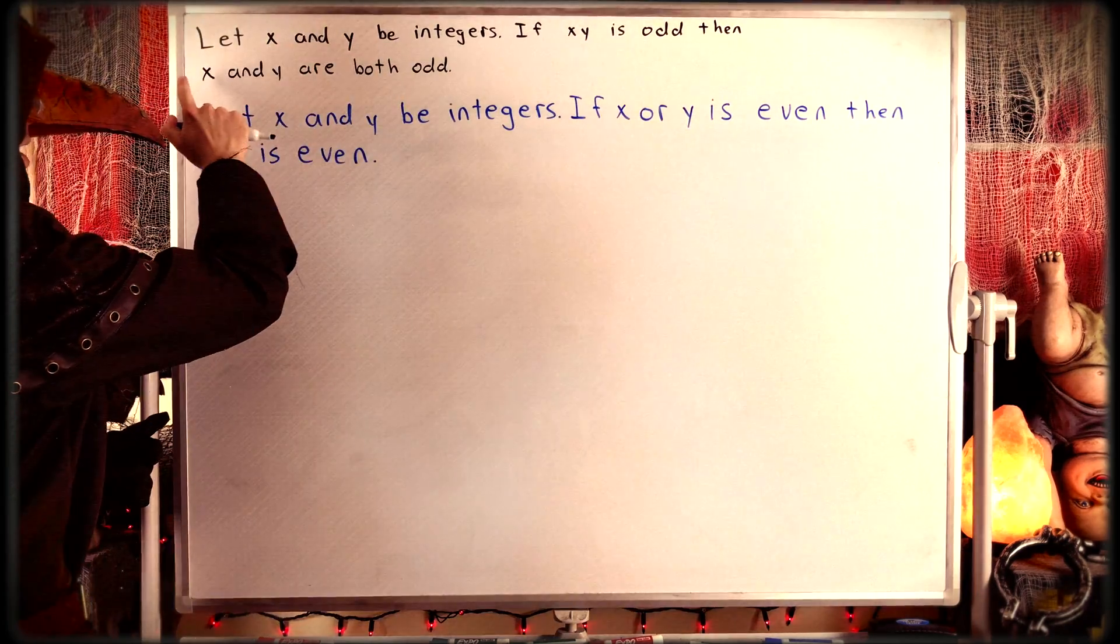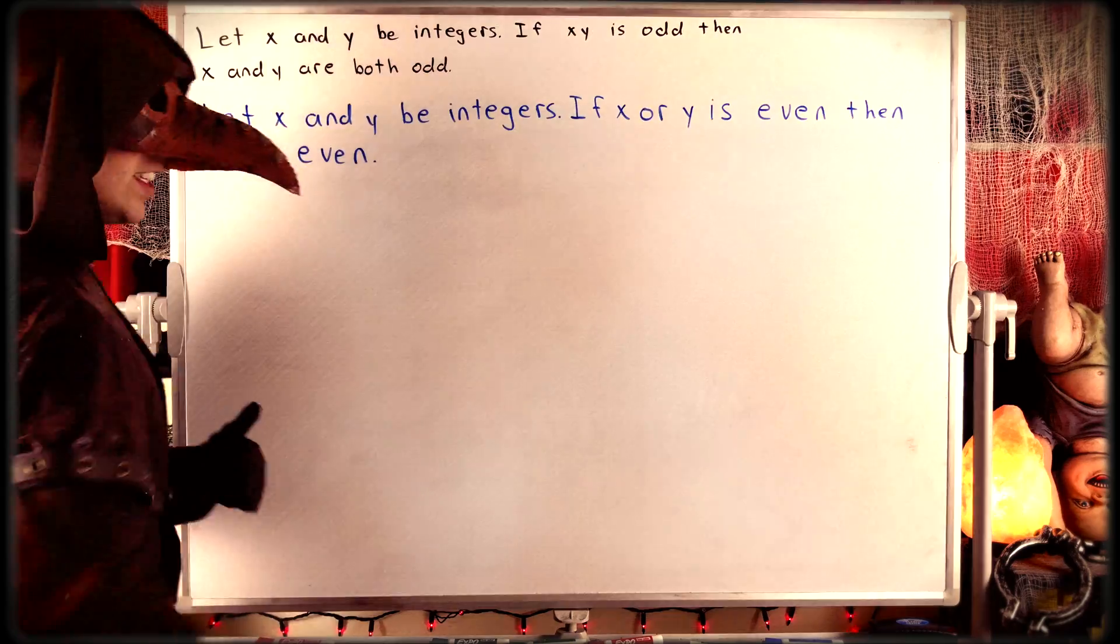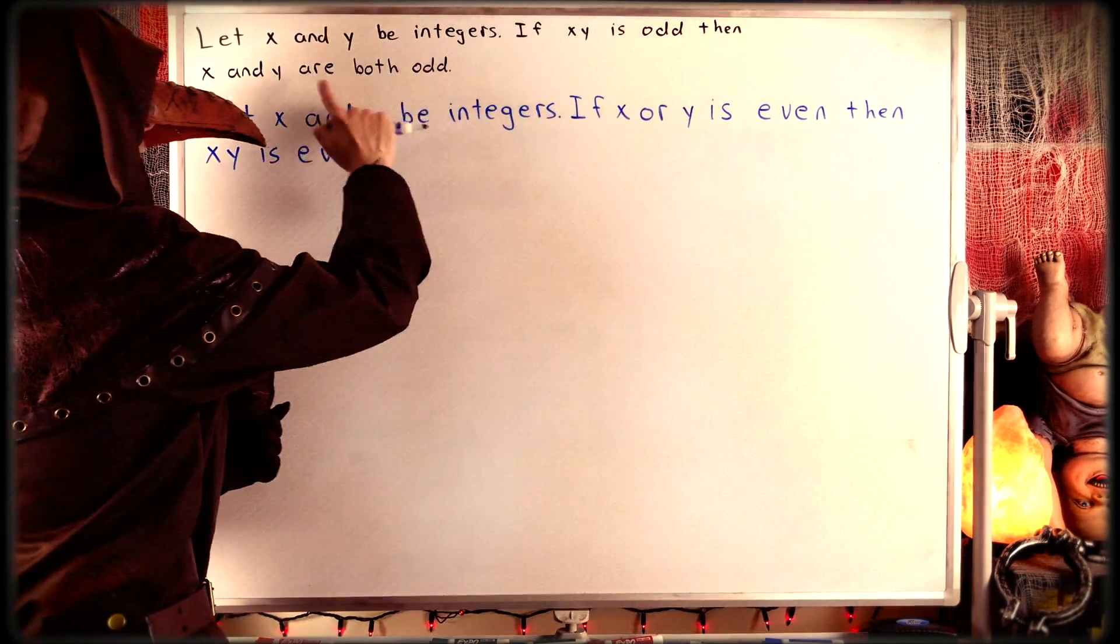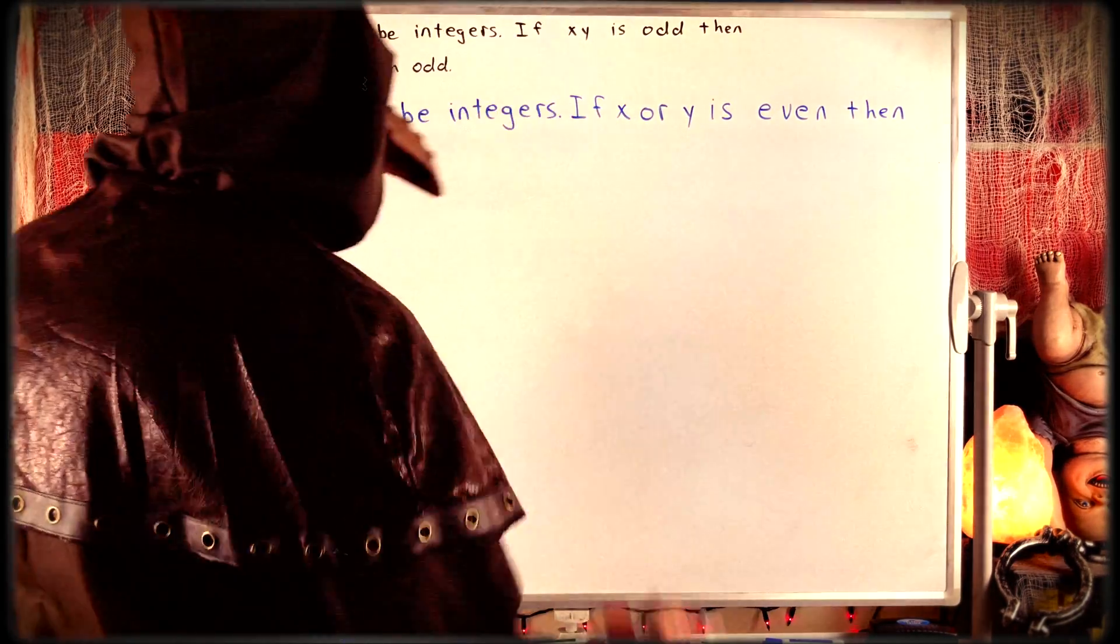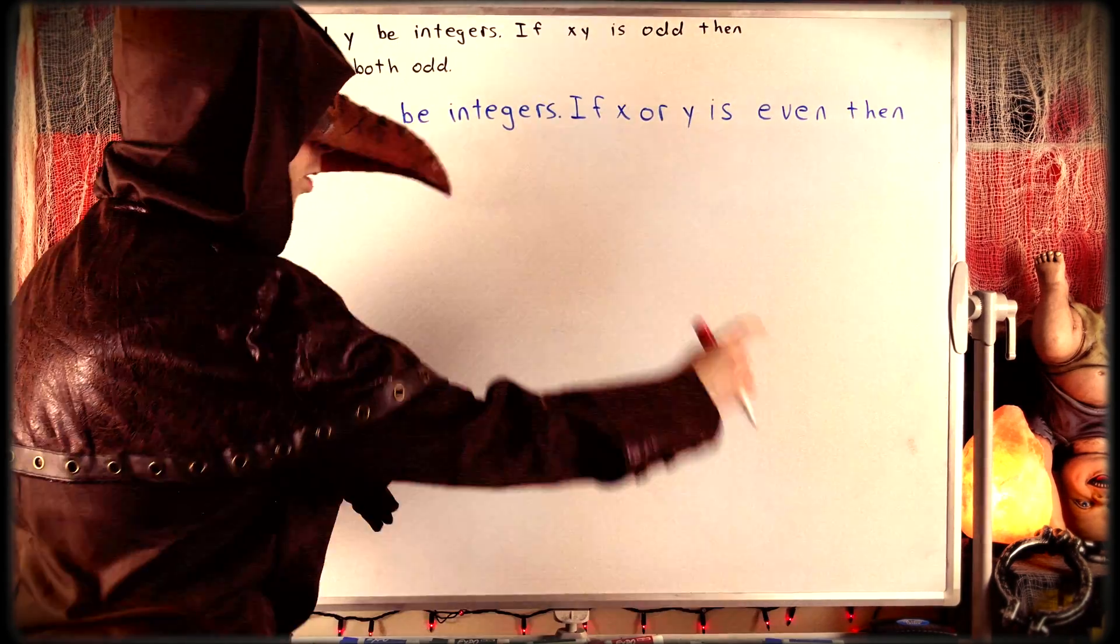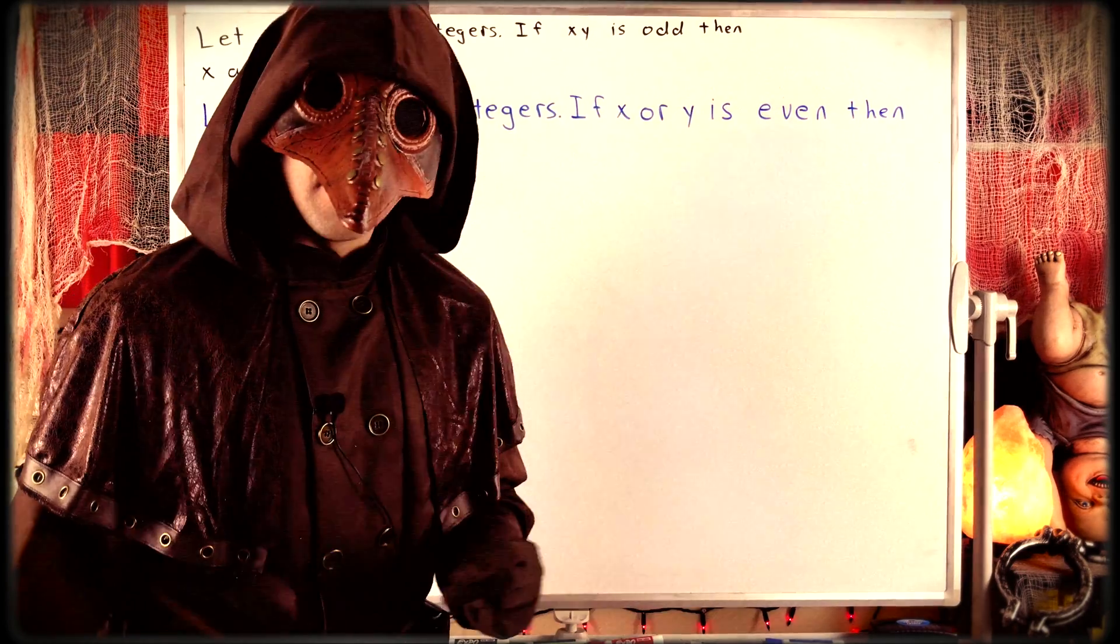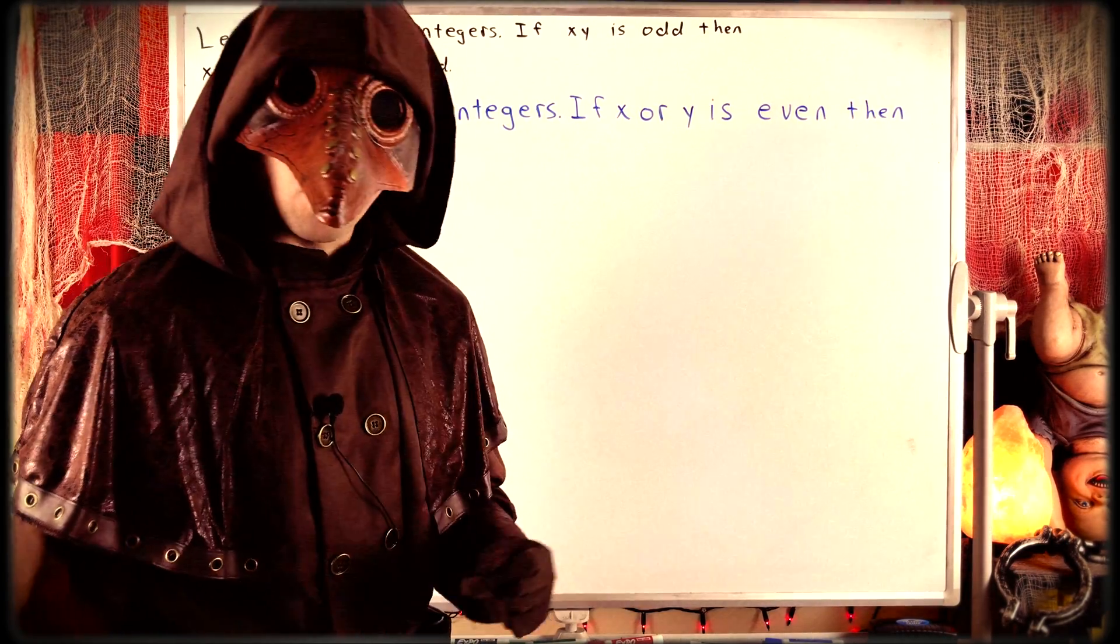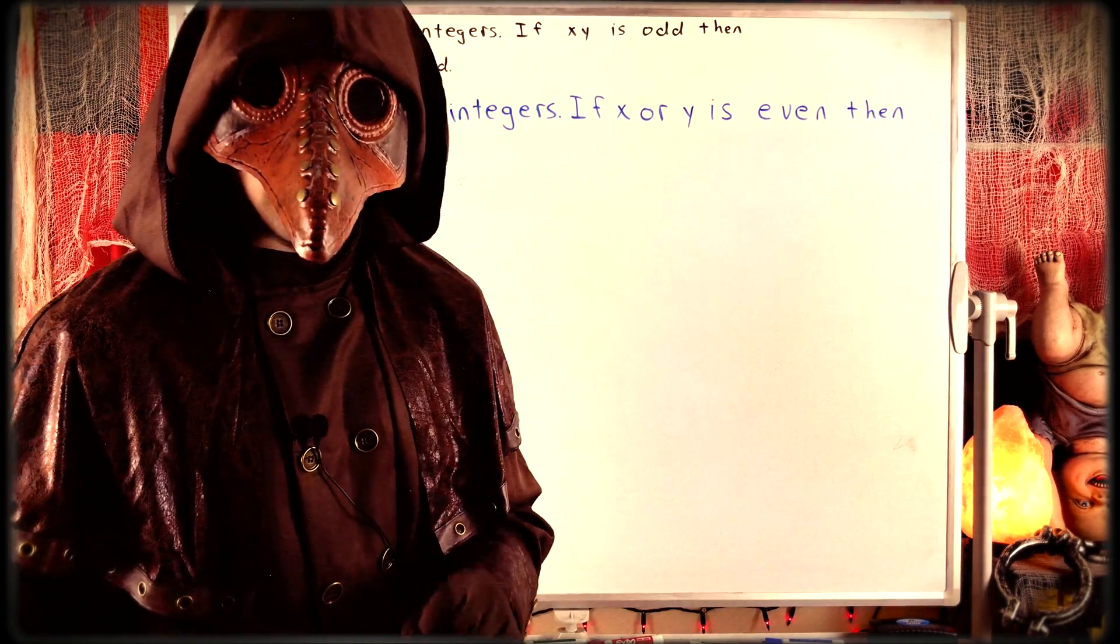And I think in this case, it's pretty clear how we can prove the contrapositive, whereas it was a little less clear how we might prove the original statement. So let's finish things up by going through this quick proof of the contrapositive. Again, we're assuming x and y are integers. And now we're assuming that at least one of x or y is even. It could be that x is even, or it could be that y is even, or it could be that x and y are both even. Either way, the proof is going to proceed in basically the same manner.